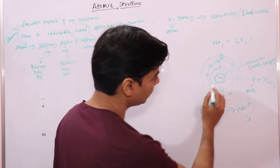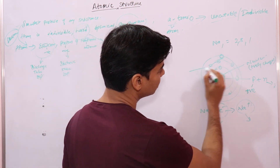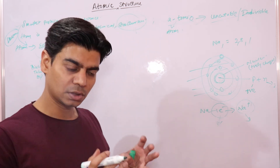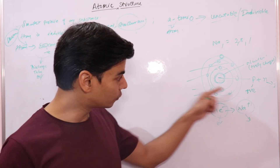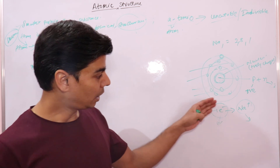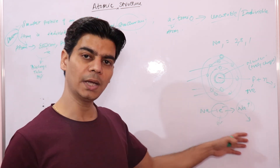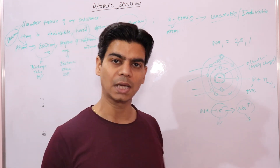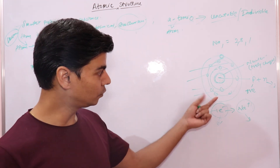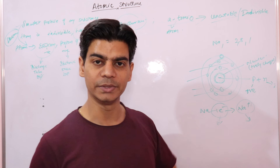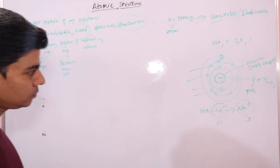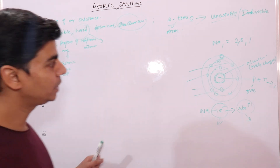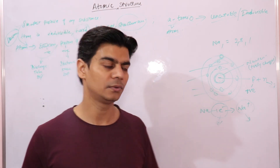If you look at the atom, it is hollow from inside — it is not hard or completely solid. Rutherford's alpha particle scattering experiment proved that the atom is hollow from inside. In future video lectures, we will continue with the discovery of electrons and protons, and the Rutherford experiment.